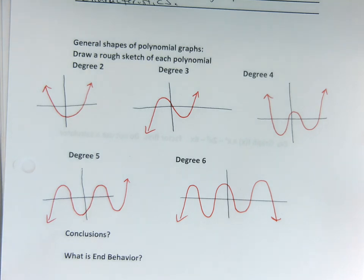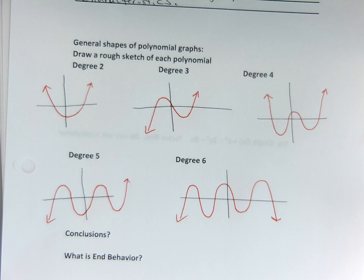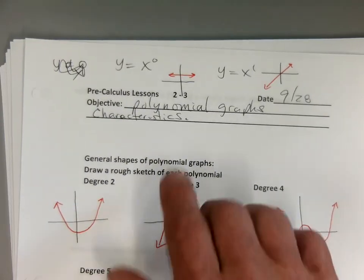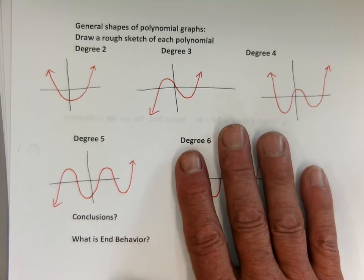Okay, conclusion. What Lauren said is degree two — one bump. Degree three — two bumps max. So degree has one less bump, okay? What else do you see? They do have a similar shape — they're very curvy. I agree with that, except for these: degree zero and degree one are straight, but the rest are all definitely curvy.